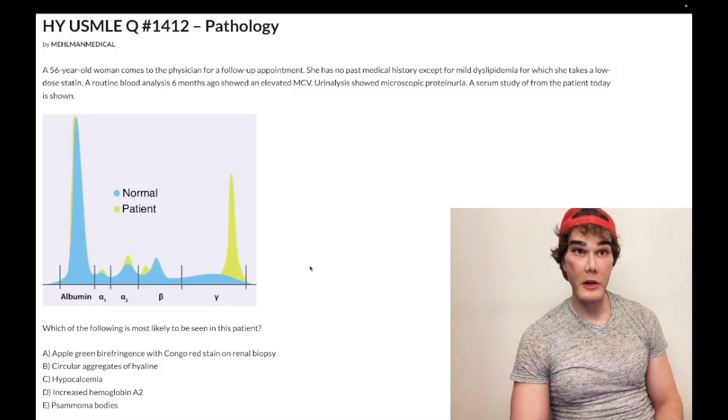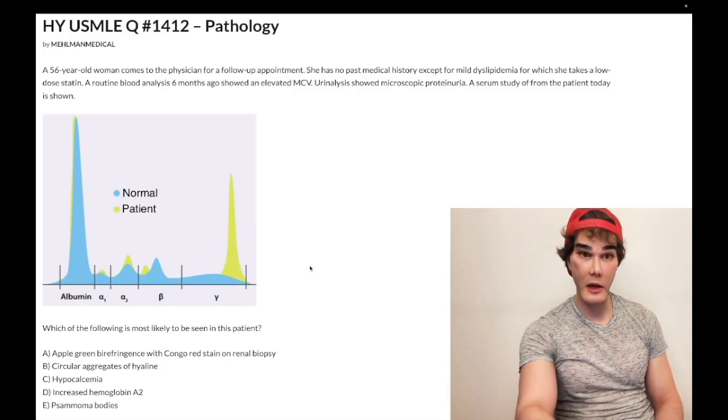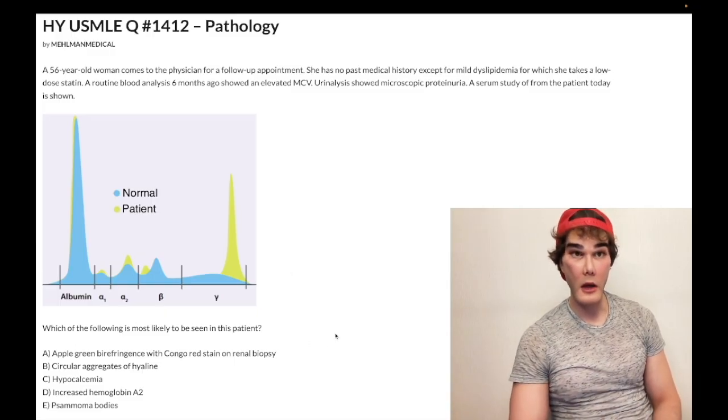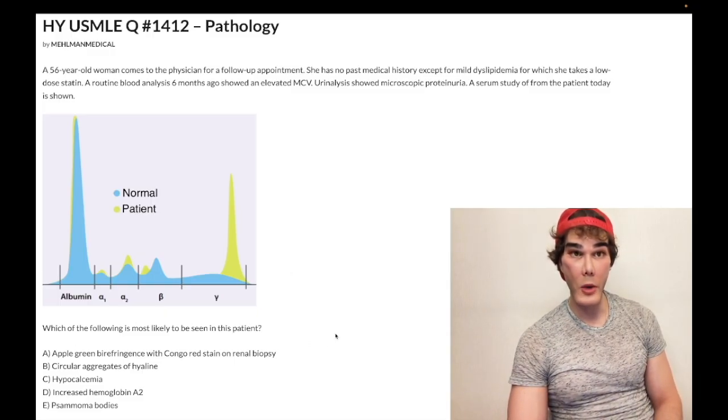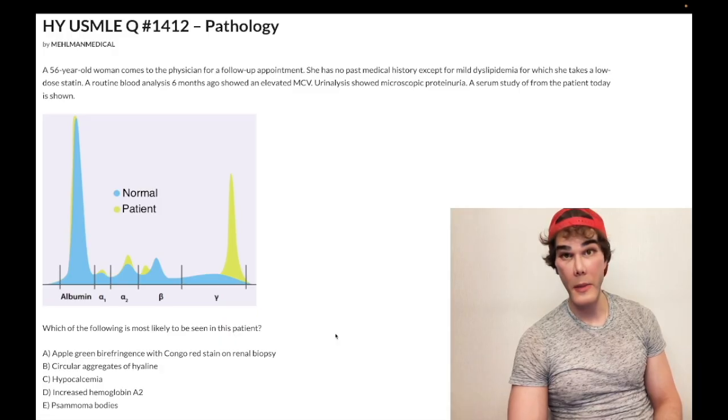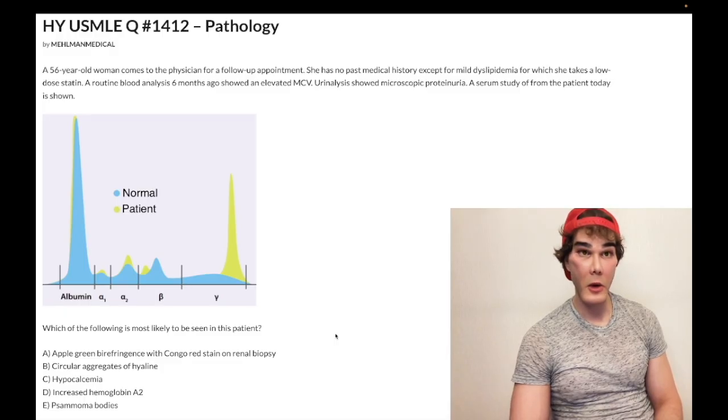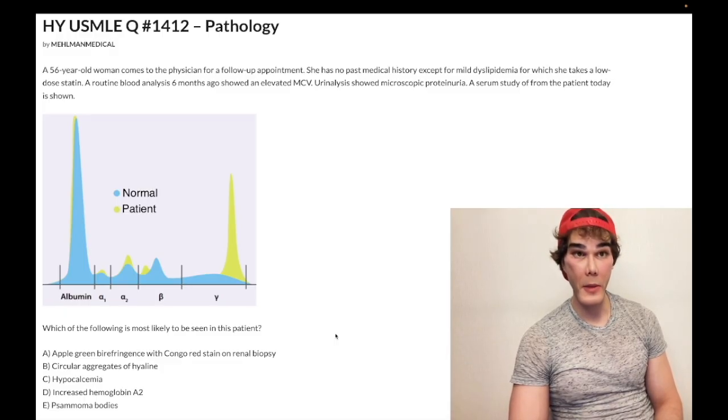So patients can get hypercalcemia, not hypocalcemia, which is why C is wrong. So the plasma cells that are abnormally proliferating, in multiple myeloma, you're going to have greater than 10% on bone marrow biopsy. So when you do the serum protein electrophoresis, which shows your M protein spike here, the next best step in management is going to be bone marrow biopsy. And greater than 10% plasma cells, that's multiple myeloma.